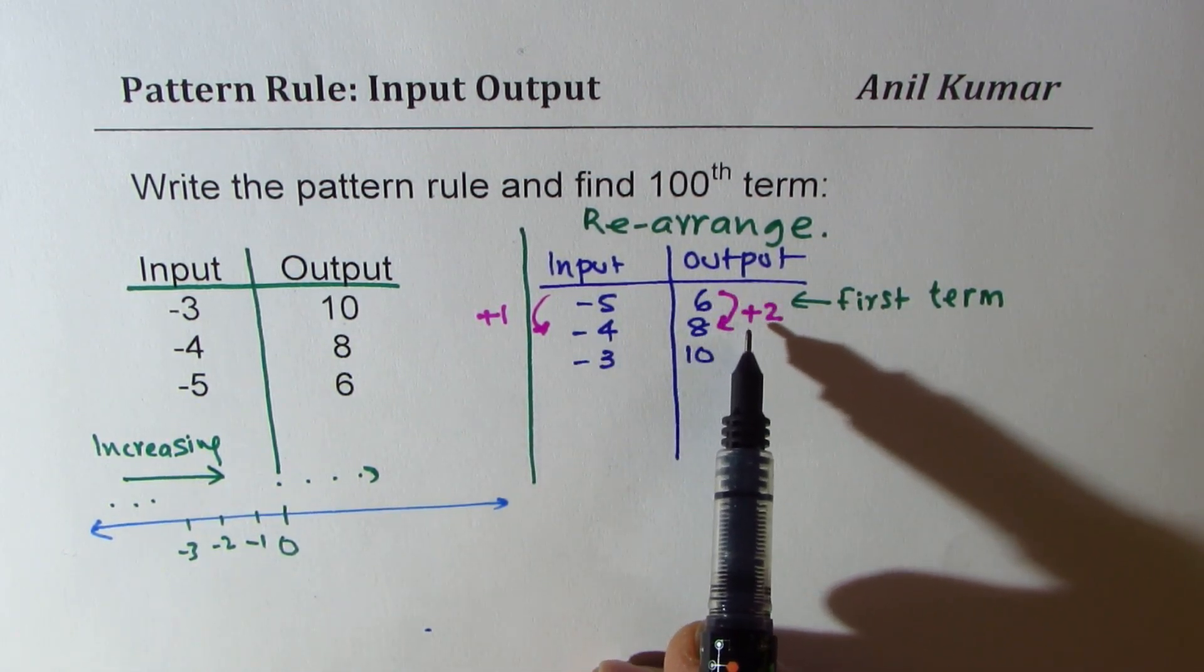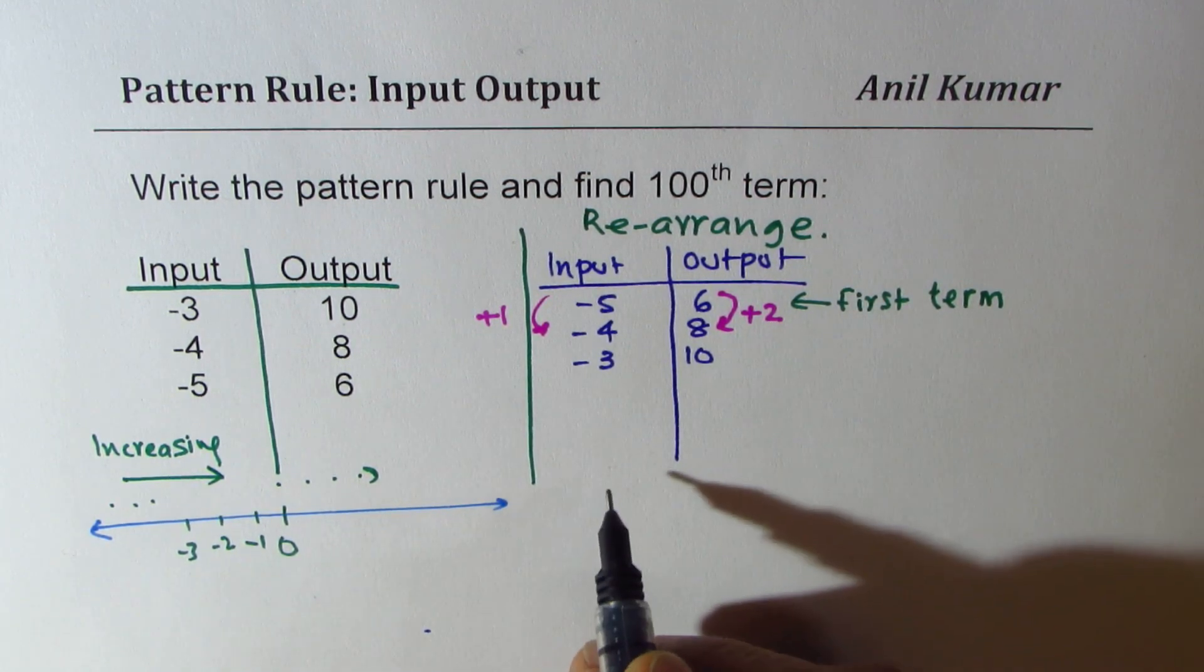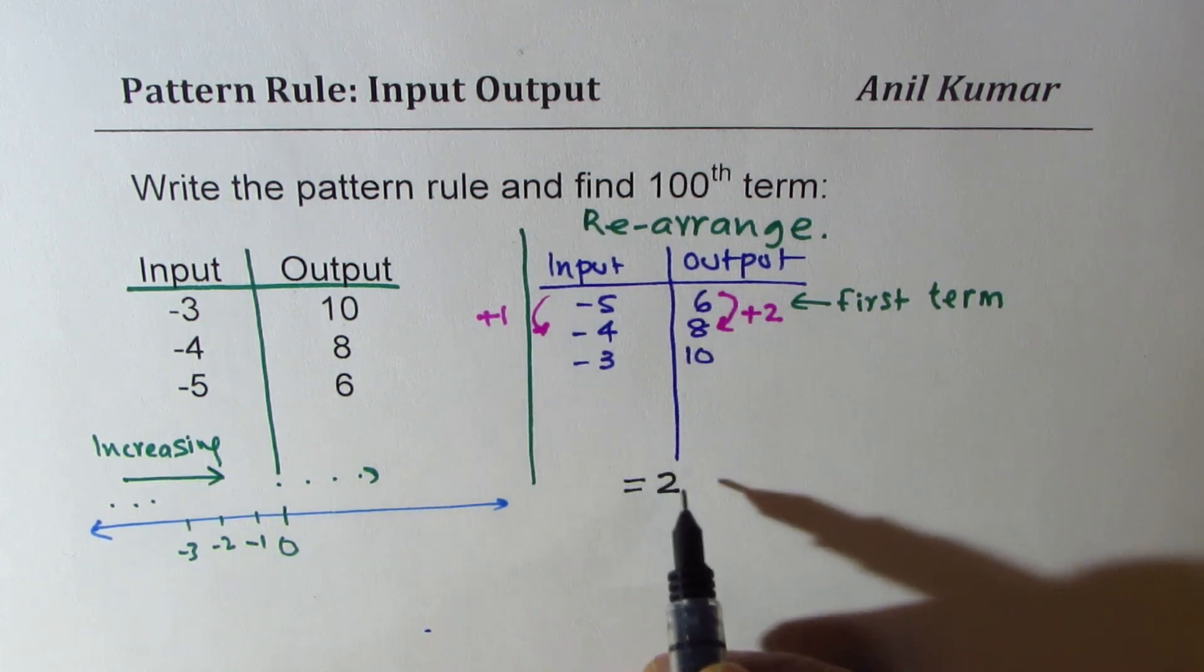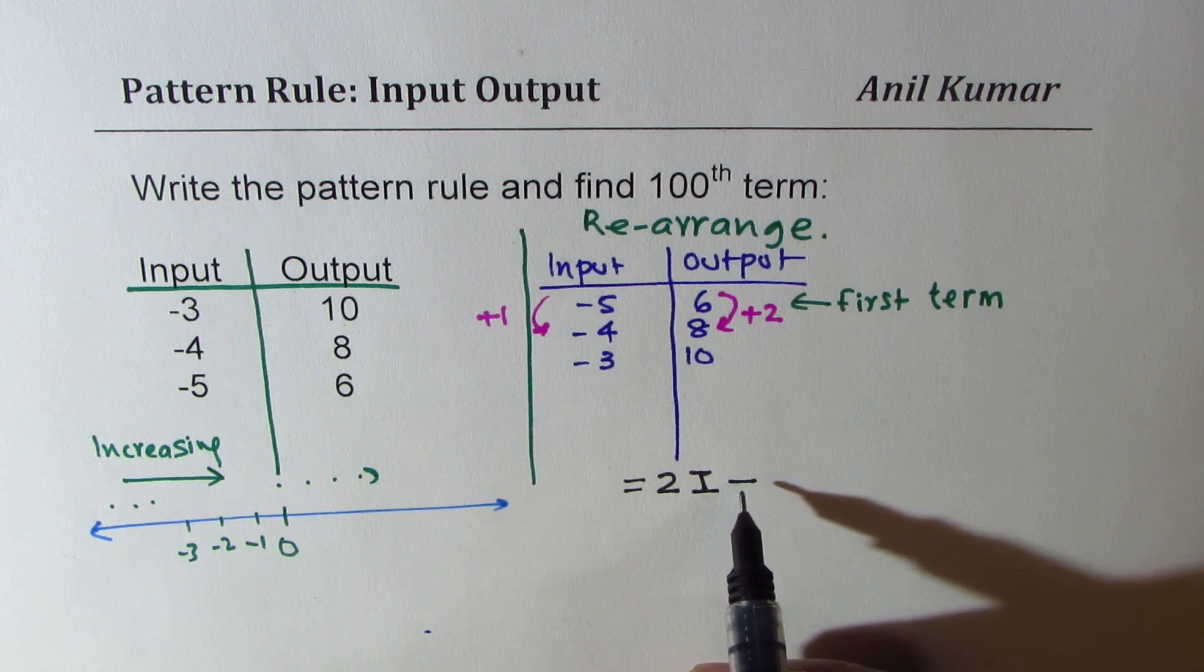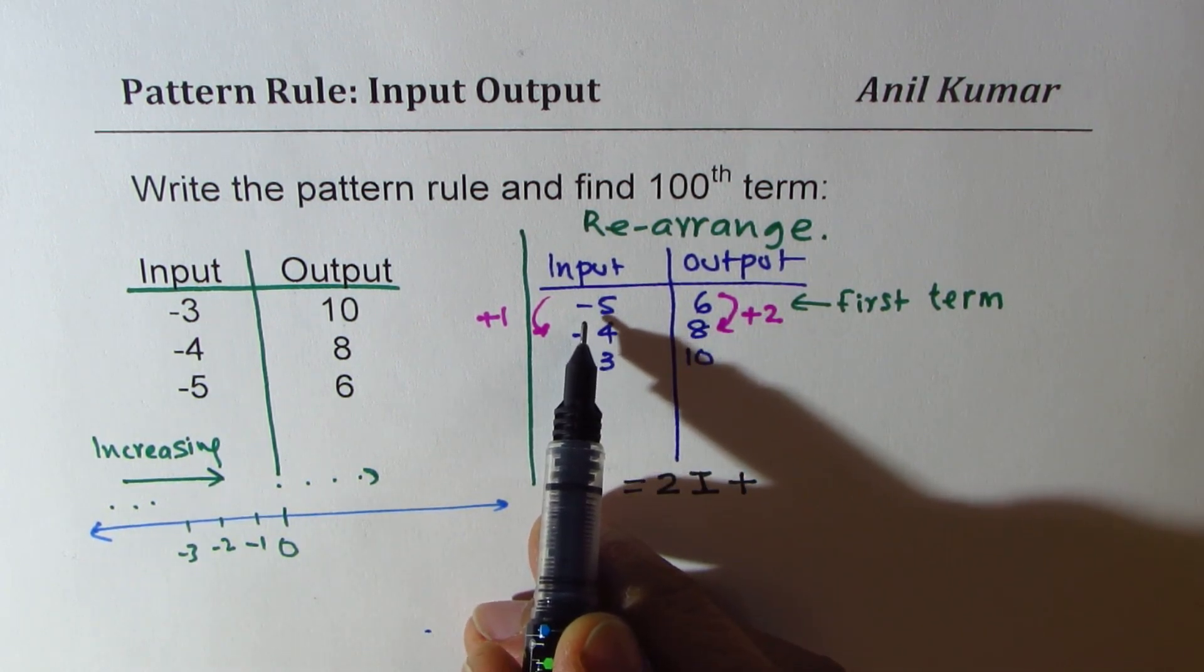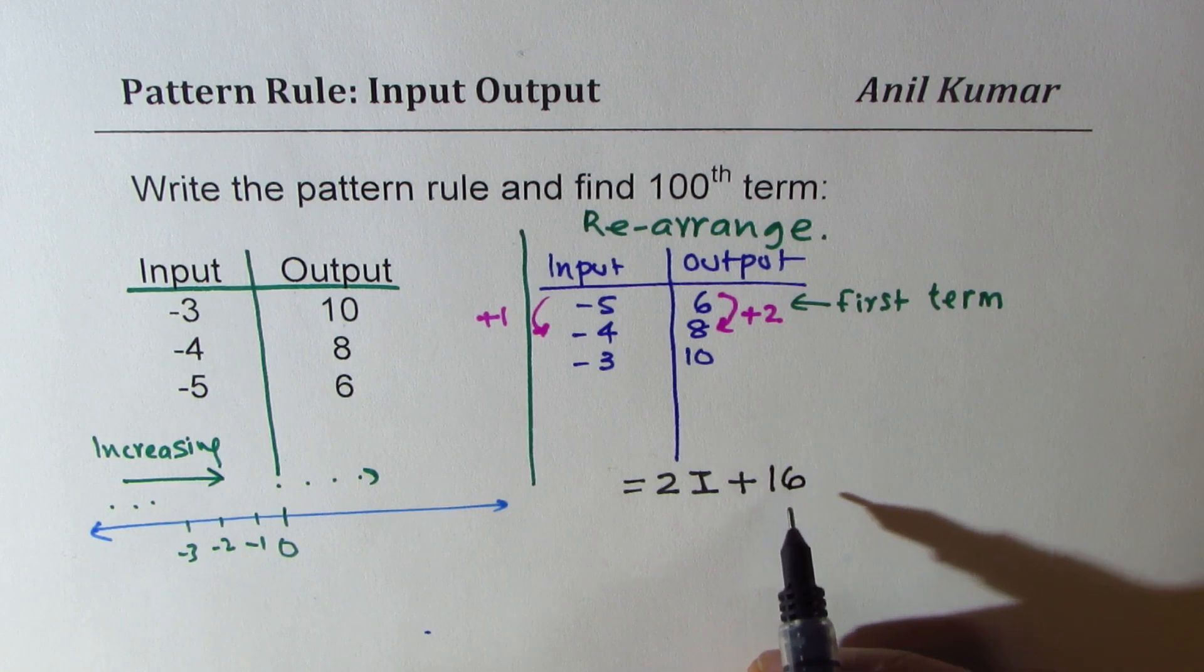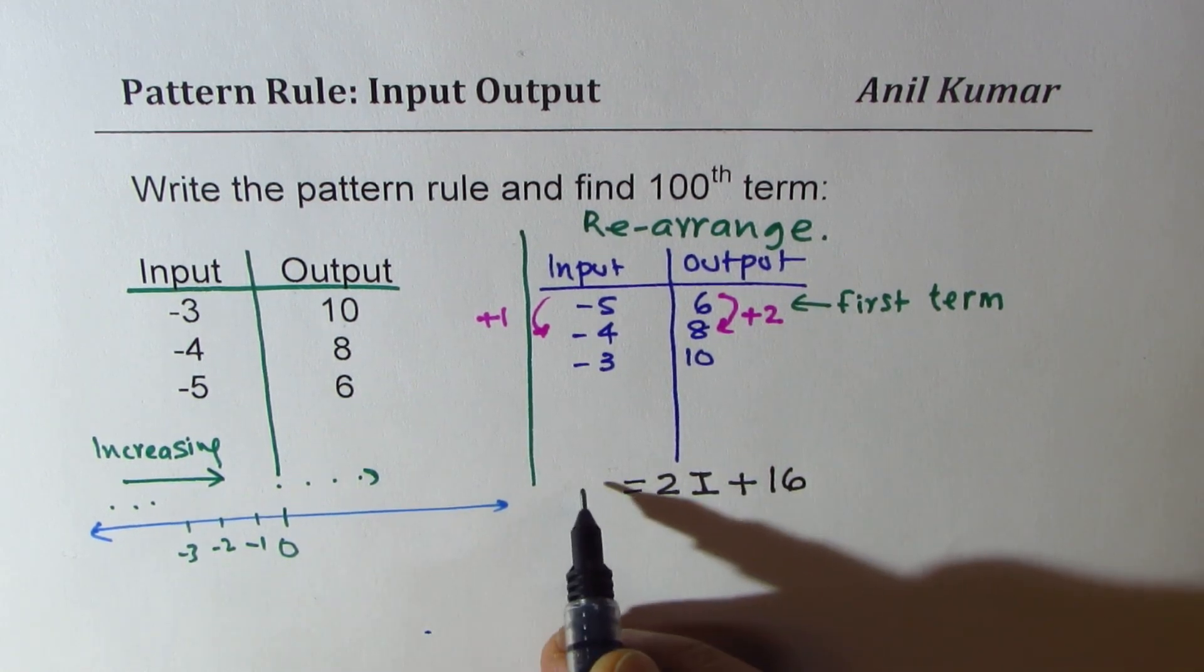So let's do the first part first and that is to relate the two. Since the numbers are increasing by two, we could write down our equation as two times the input plus what? Now if I do two times minus five I get minus ten. To get six I have to add sixteen. So that becomes my equation, that becomes my output.